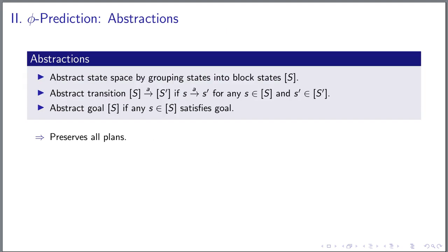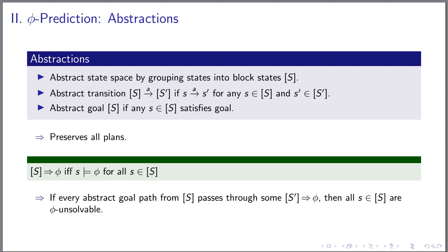For our second prediction method, we built upon abstraction heuristics. As abstractions by design over-approximate real transition behavior, the abstract state spaces also carry information about phi-unsolvable states. Namely, we say that an abstract state implies the avoid condition if all its represented states satisfy phi. Then once all abstract paths from some state go through any such an abstract state, then we know that the state must be phi-unsolvable.